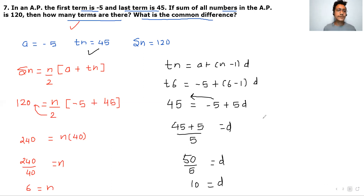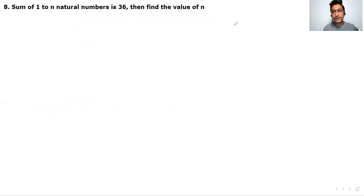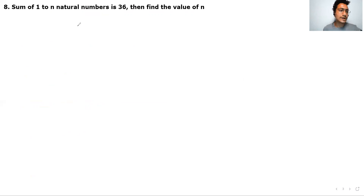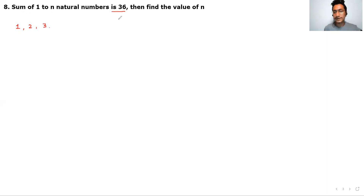Now the last question of the day: the sum of 1 to n natural numbers is 36. Find n. It is quite simple. Natural numbers start from 1, 2, 3... Sn equals 36.